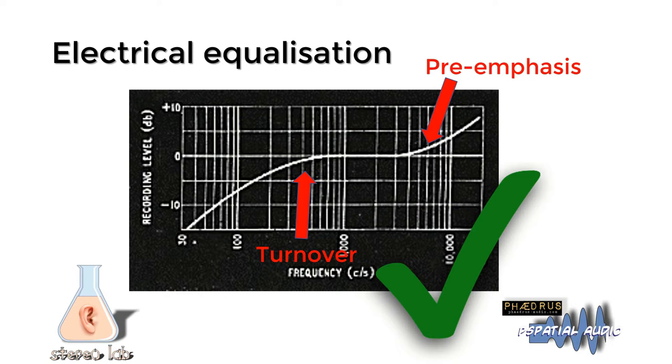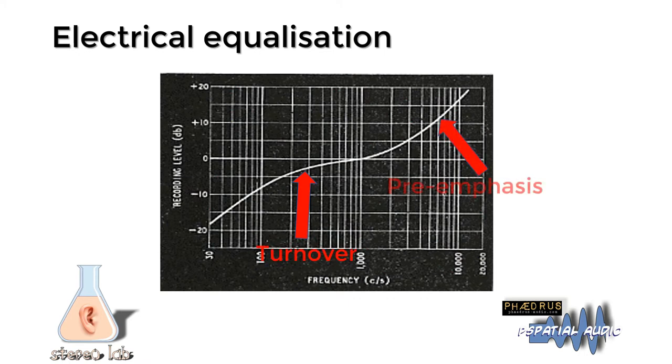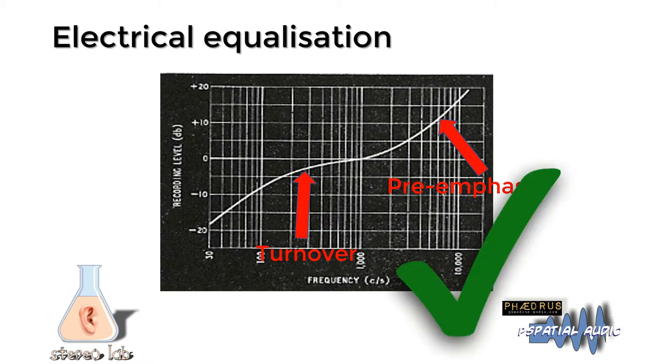Turnover and pre-emphasis, such a good idea that they almost met in the middle, which is more or less where we are today in what is known as the RIAA characteristic, and the one with which all modern records are recorded.